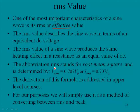The abbreviation RMS stands for root mean square, and is determined by 0.707 times the peak value. That is in voltage. If it's current, it'll be the same thing. The RMS current, or the peak current times 0.707 will give us the RMS current.